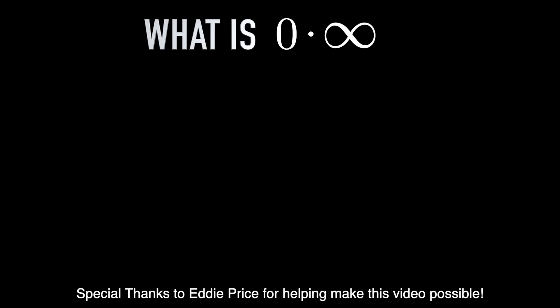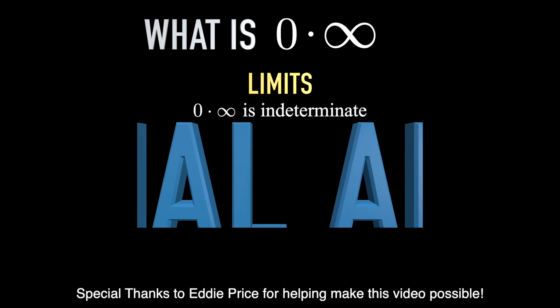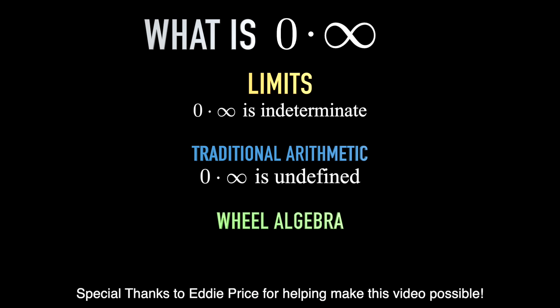And we can finally answer the question: what is zero times infinity? And like all great questions, the answer is — it depends. It depends on the context. If we're talking about limits, zero times infinity is indeterminate. If we're talking about traditional arithmetic, zero times infinity is probably best left undefined. And if you're talking about wheel algebra, you can say zero times infinity is the nullity element.